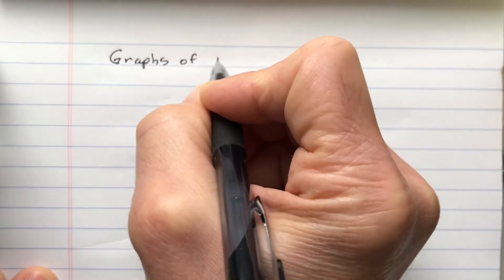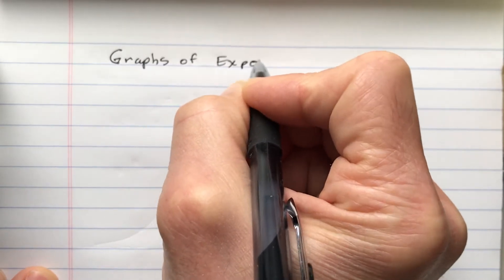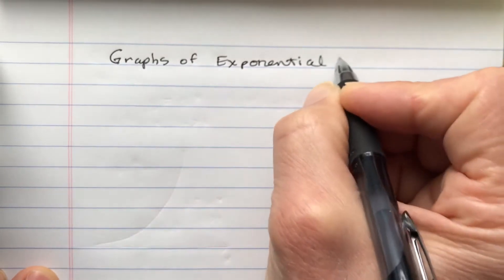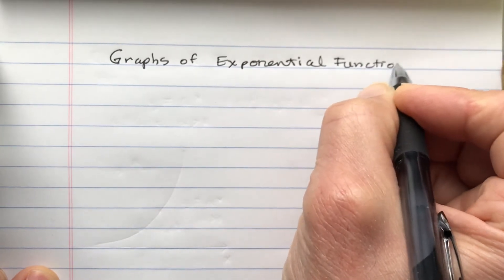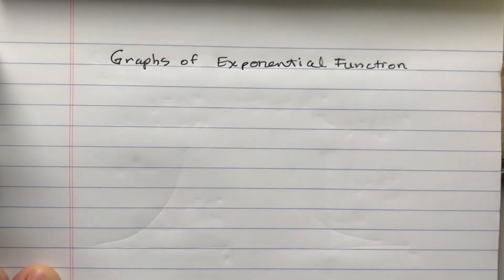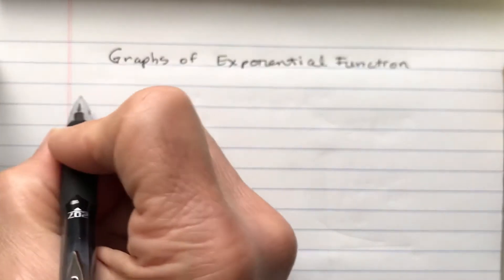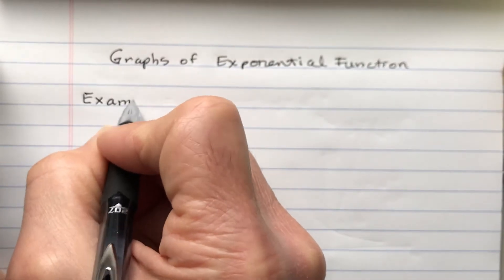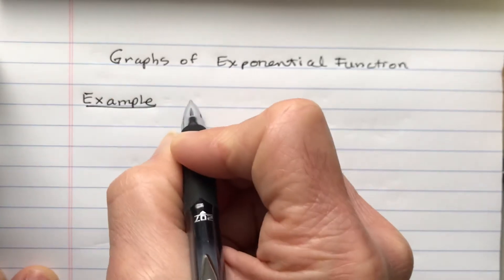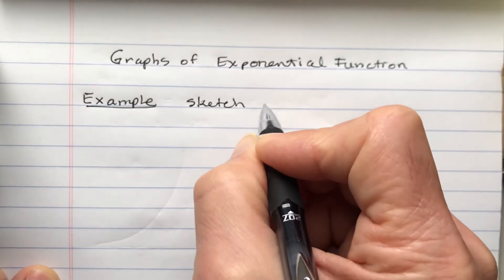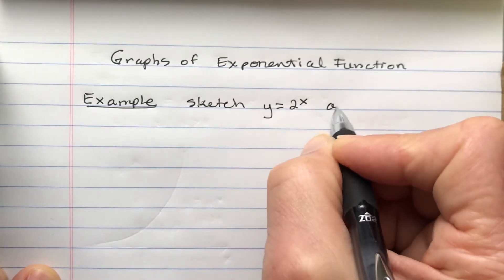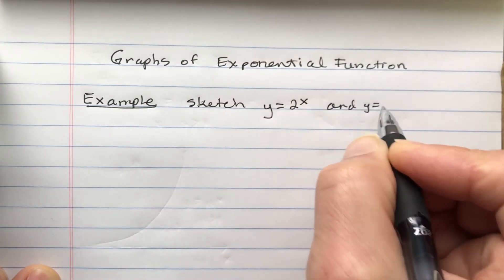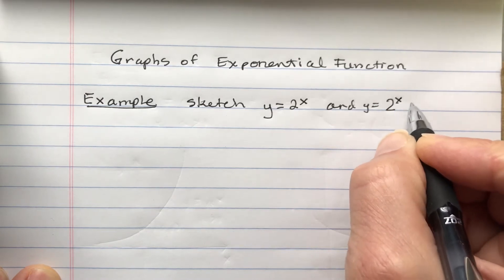Here we're going to look at some graphs of exponential functions, and mostly what we're going to look at is translations and reflections. So what we're going to look at is to sketch two graphs: y equals 2 to the x, and y equals 2 to the x plus 1.